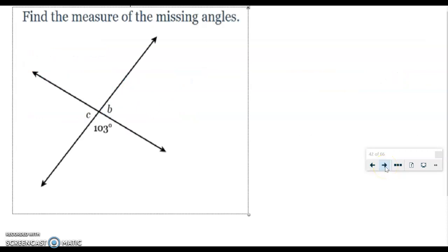Alright, so here it says find the measure of the missing angles. We're looking for the measurement of angle C and the measurement of angle B. We know that this angle here is 103 degrees.